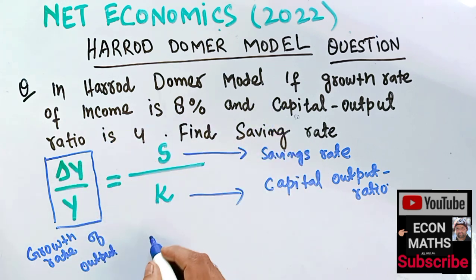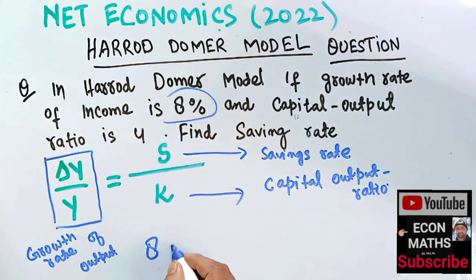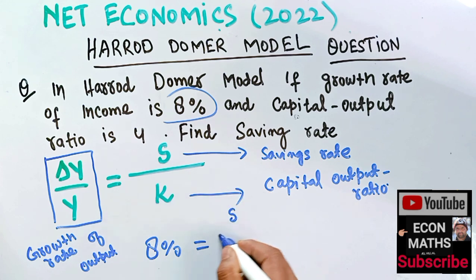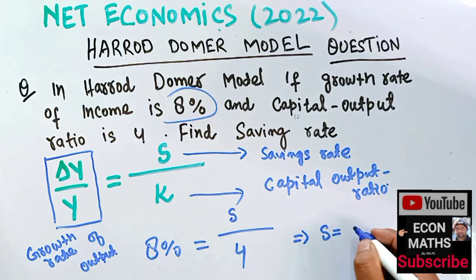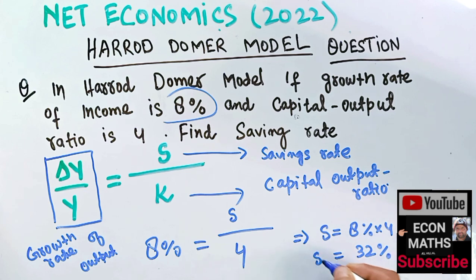Since the growth rate of output is given as 8%, we substitute: 8% = S / 4. This implies S = 8% × 4 = 32%. So the savings rate is 32%. I hope I made myself clear. Thank you.